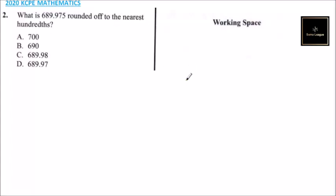This is question number two. What is 689.975 rounded off to the nearest hundredth? So you can write this number 689.975.